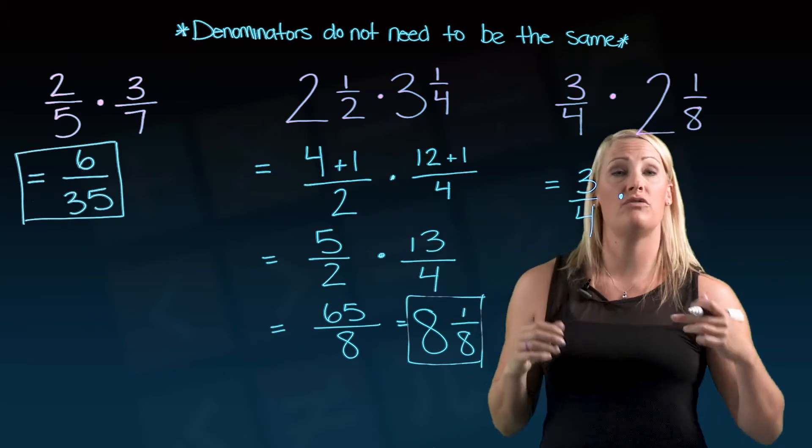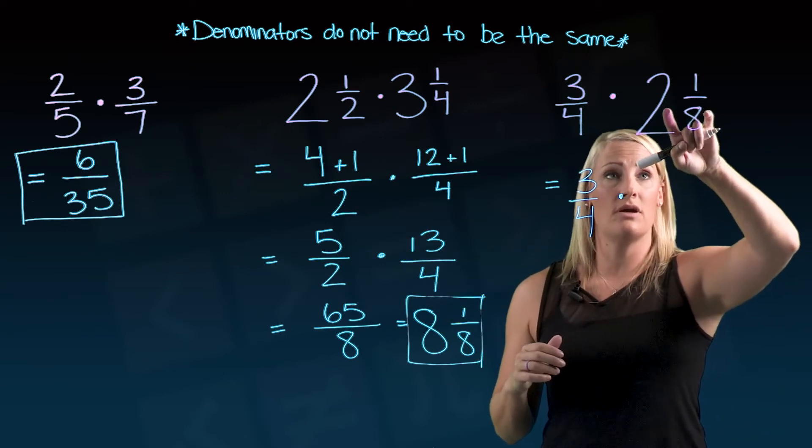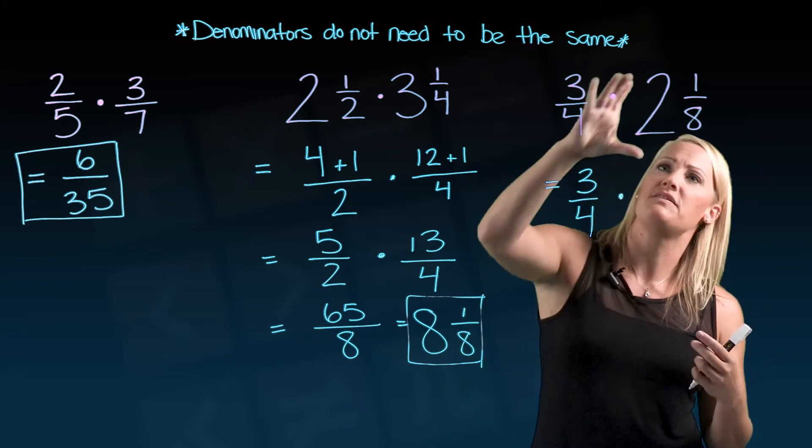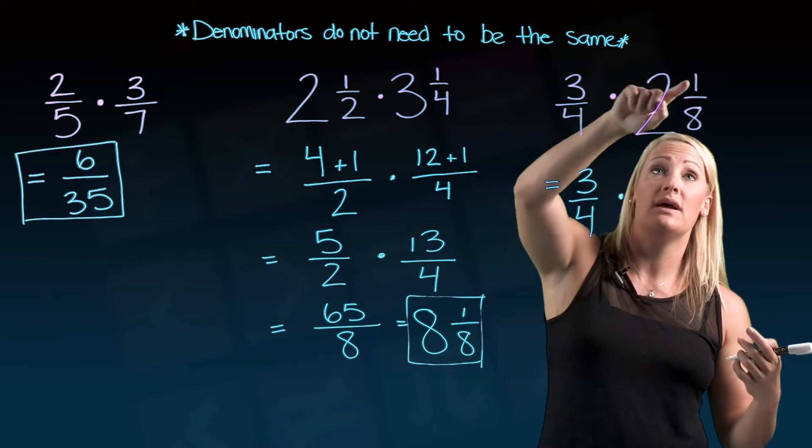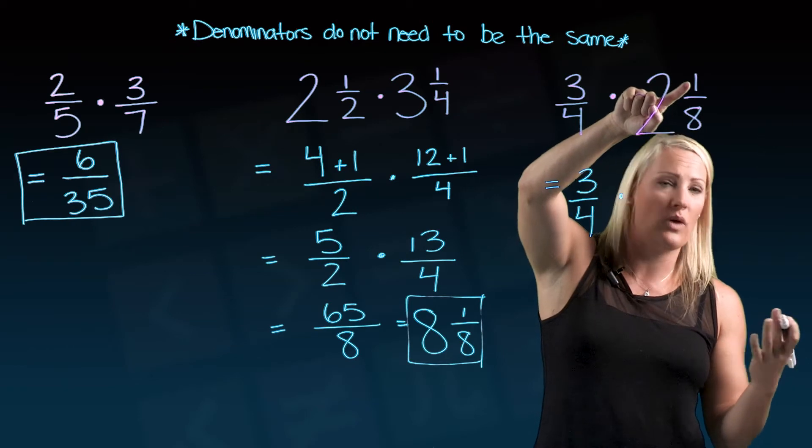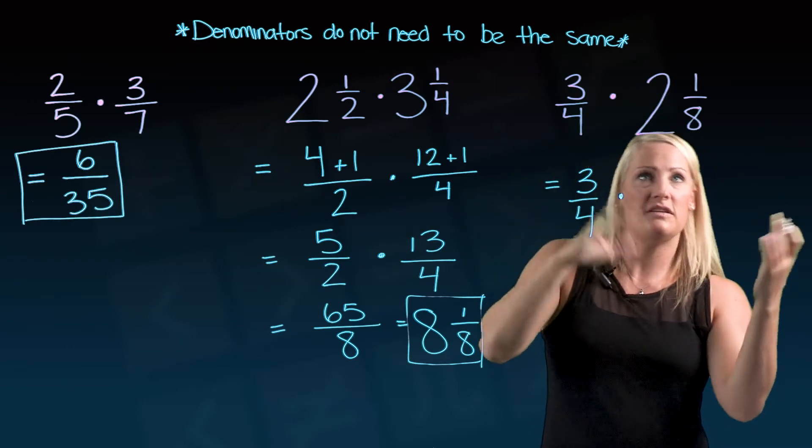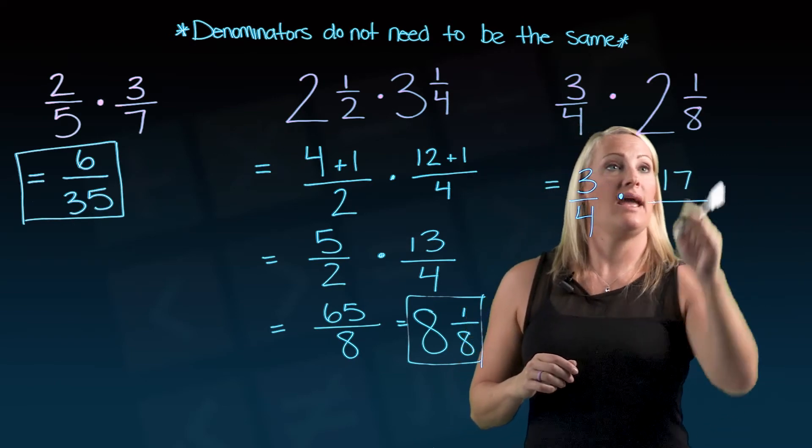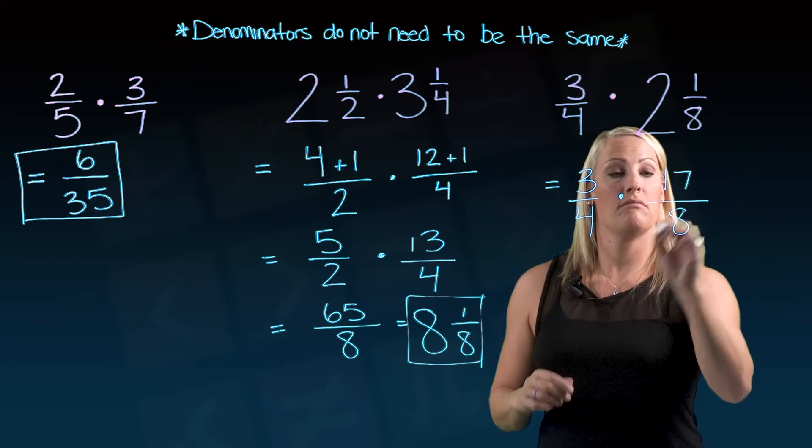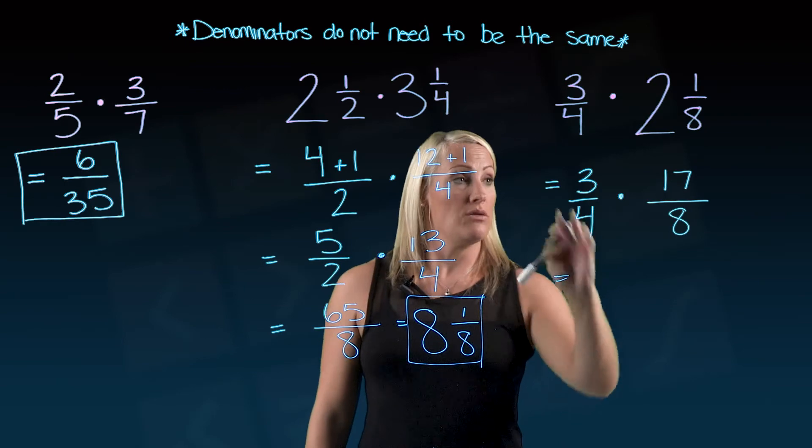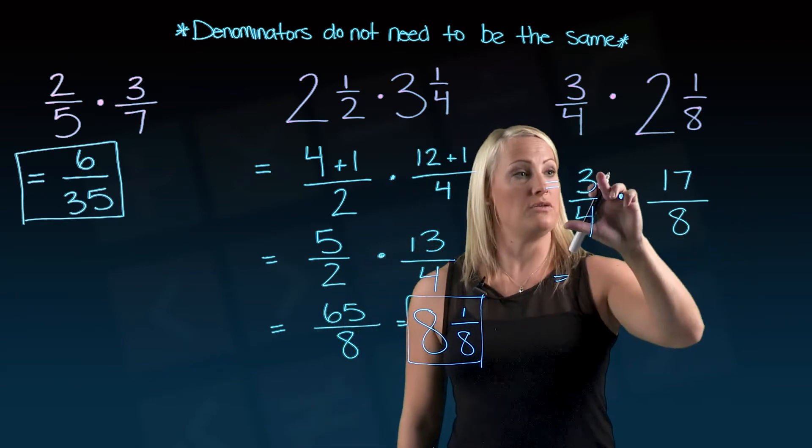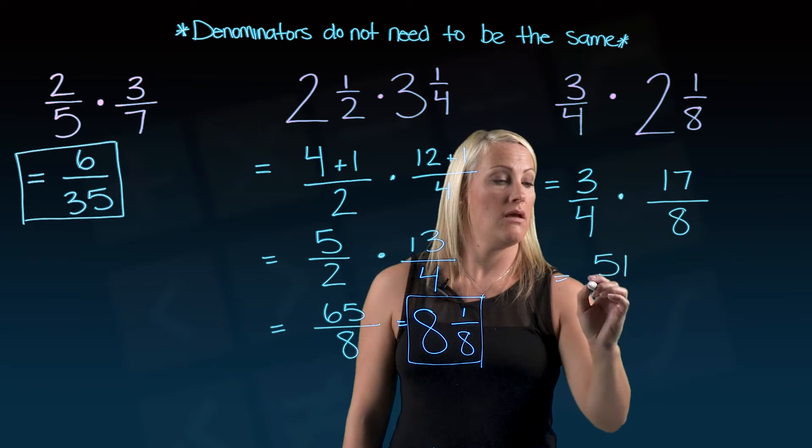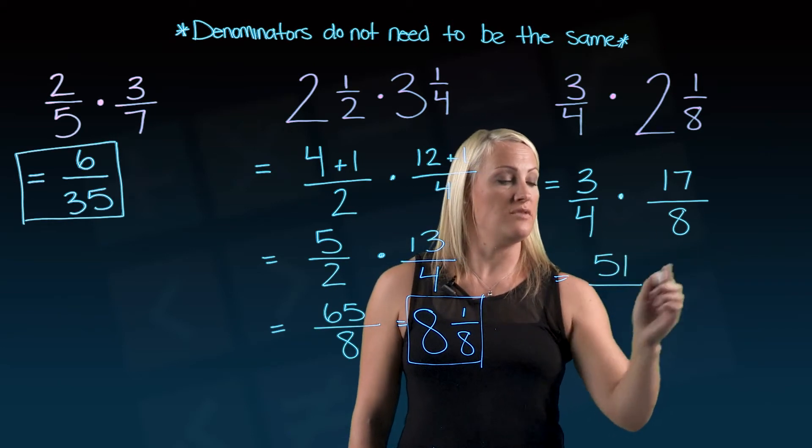But here, I need to make that into an improper fraction. The method we used over here was we took the big number, multiplied it by 8. 2 times 8 is 16. So there's 16 eighths represented in that whole 2. Can't forget that guy though. That's 1 extra eighth. So 16 plus 1, 17. And the 8th stays the same. And now I can multiply straight across.